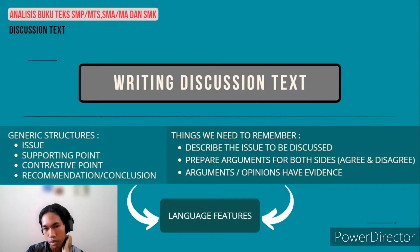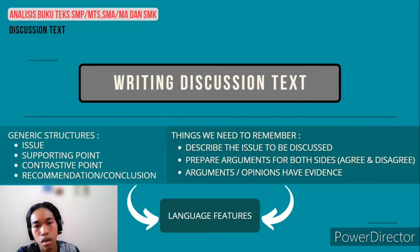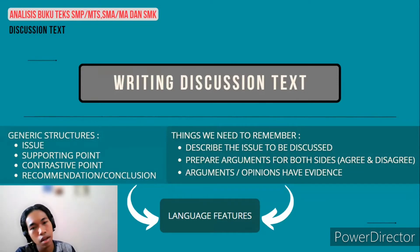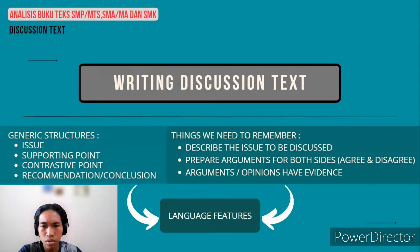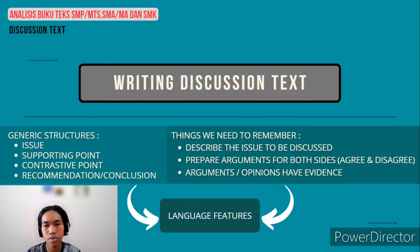The last one — the final touch of writing discussion text — is the recommendation, or we can simply call it the conclusion. It is used to tell the readers how to solve the issue by connecting the arguments for and against. We can simply call it recommendation, summary, or conclusion.